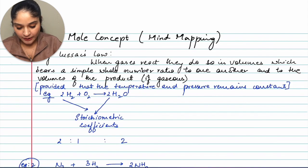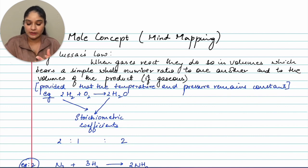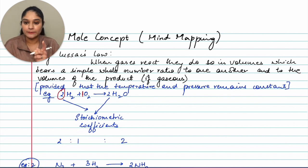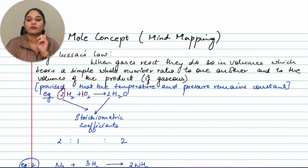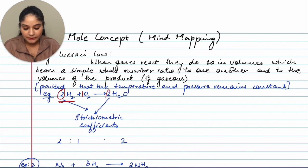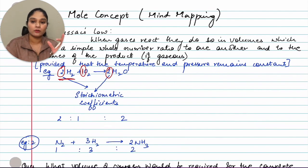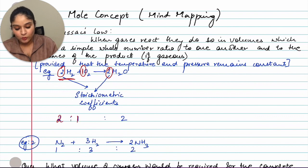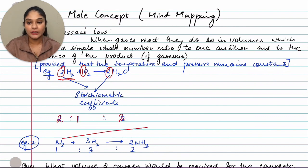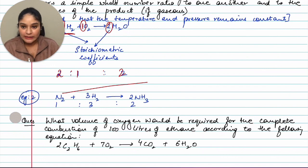Hydrogen plus oxygen giving water vapor — when we balance the equation, the ratio is 2:1:2. That means two volumes of hydrogen combined with one volume of oxygen gives two volumes of water vapor. These numbers — 2, 1, and 2 — are also known as stoichiometric coefficients. Let's look at another example: nitrogen plus hydrogen giving ammonia, which gives a ratio of 1:3:2.